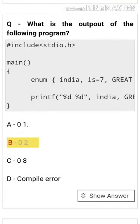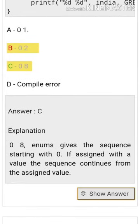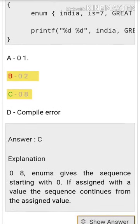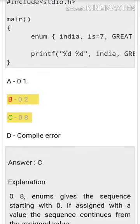What is the output of the following program? The answer is 0 8. Enums give a sequence starting with zero. If assigned with a value, the sequence continues from the assigned value.